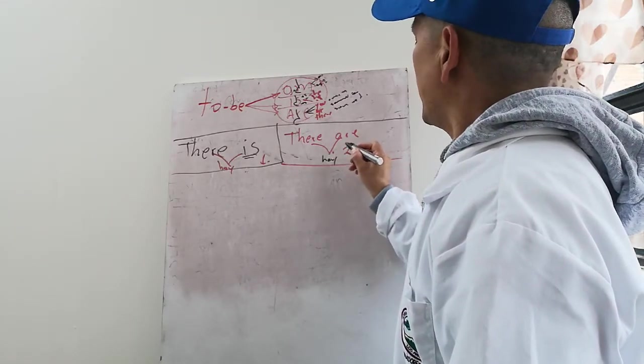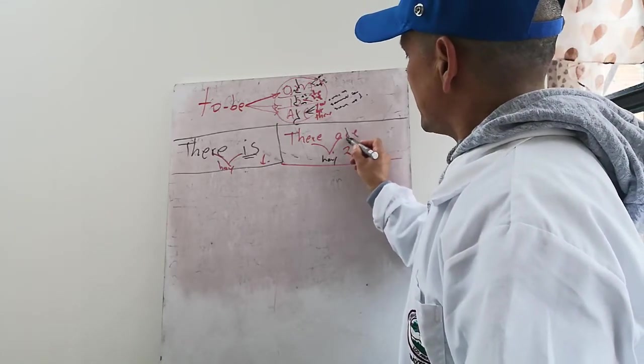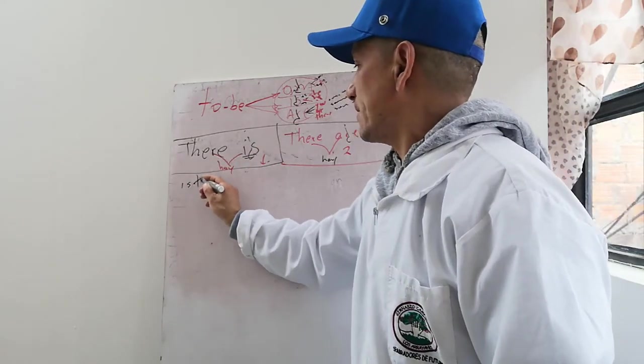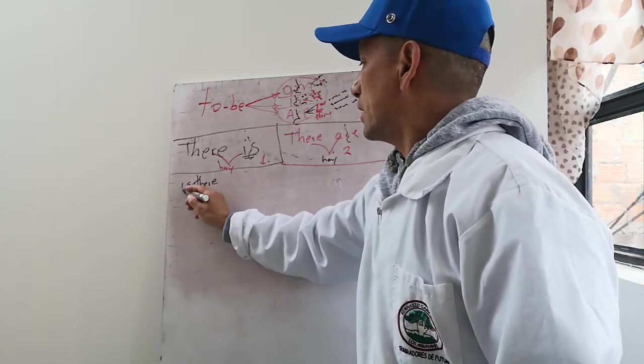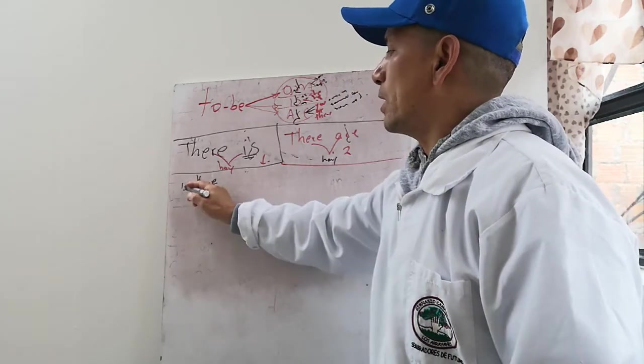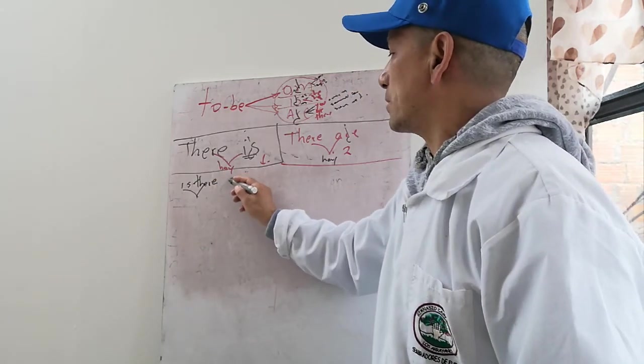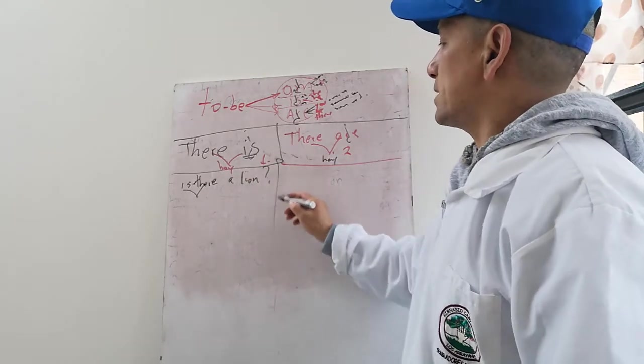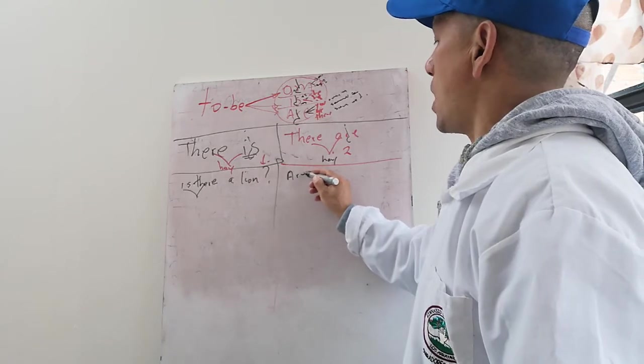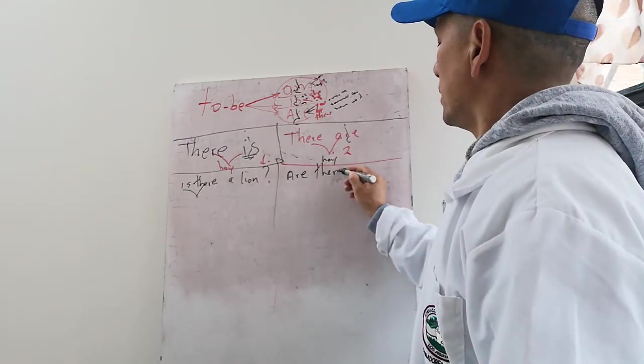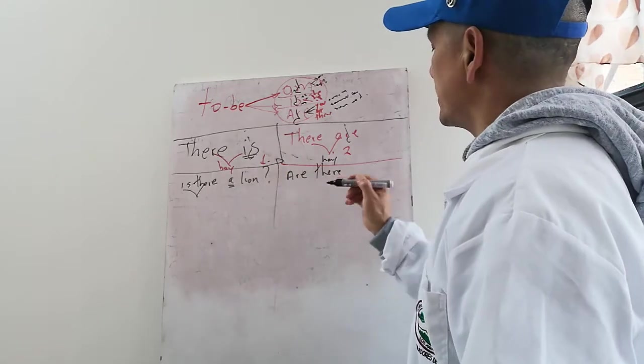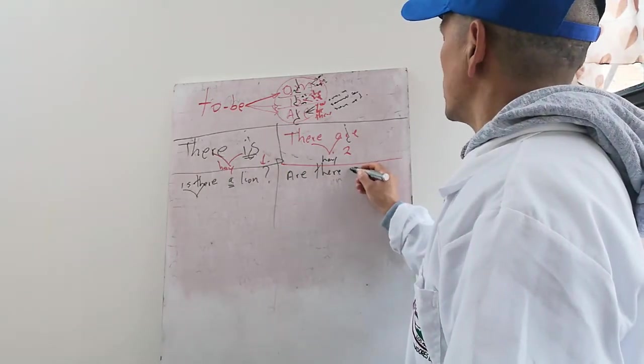En términos generales, entender que este es un signo de pregunta también. Si yo pregunto is there, is there a lion, sería singular hay un león. Y si va a ser plural entonces sería are there y ya no utilizo la palabra a porque a es singular, are there some lions.